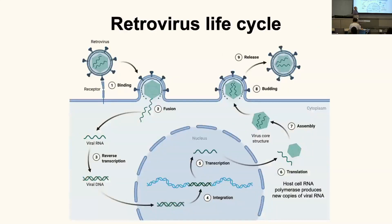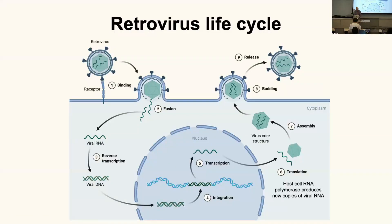Retroviruses have a pretty complicated life cycle. Just like all viruses, it starts with finding the cell — the virus has to find your cell and match to a particular receptor that the virus envelope protein is a binding partner for. That binding interaction allows the membrane to fuse, since the virus has that same kind of lipid membrane our cells have. That allows the virus to stick to the surface and empty its internal contents — the protein capsid with all the viral proteins and copies of the RNA — into the cell. Once it gets in the cell, that capsid uncoats and the viral RNA is released.